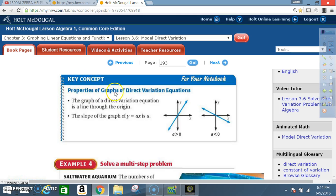Key Concept: Properties of Graphs of Direct Variation Equations. The graph of a direct variation equation is a line through the origin, like so. Here, a is greater than zero. In other words, they're saying the slope is positive.